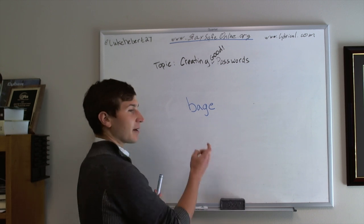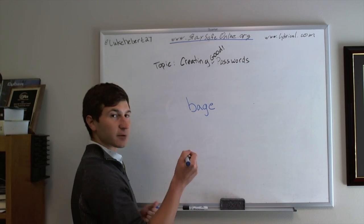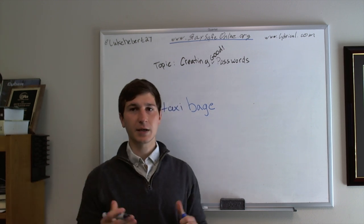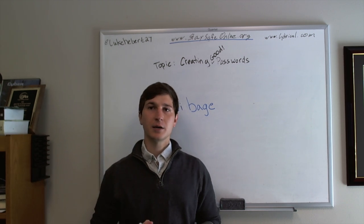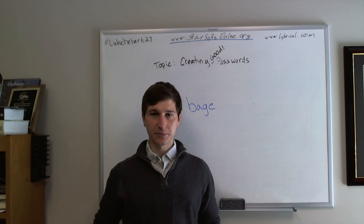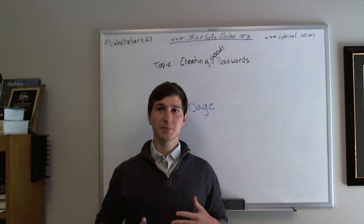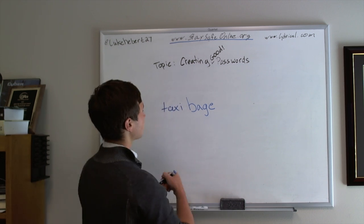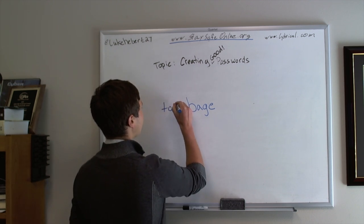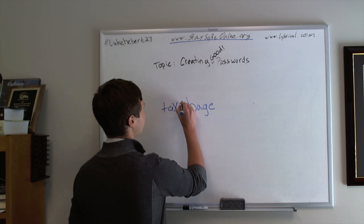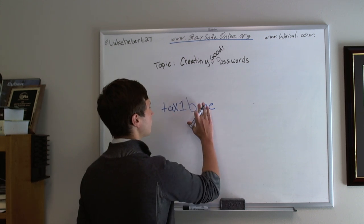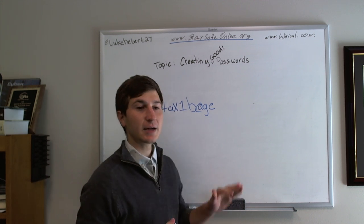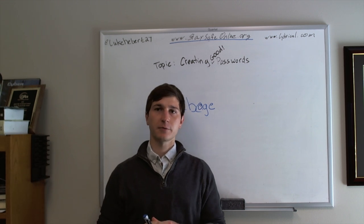Take out the "cab" and then, synonymous with cab, use "taxi" — so "taxibage." That's something I can remember. To further reduce the guessability, I'll put in some special characters as well as capitals and numbers. I'll capitalize the x, turn the i into a 1, and put an at-symbol for the a — now there's a larger character set to work from.